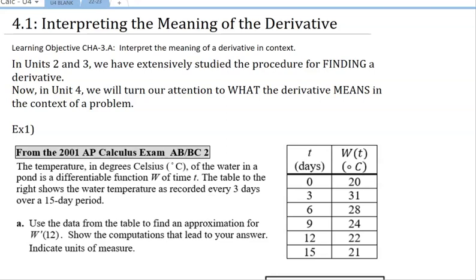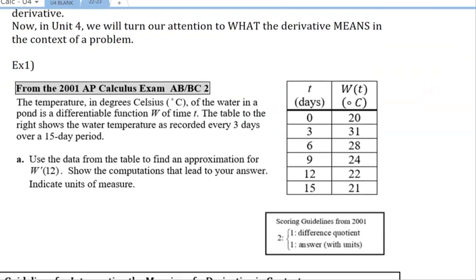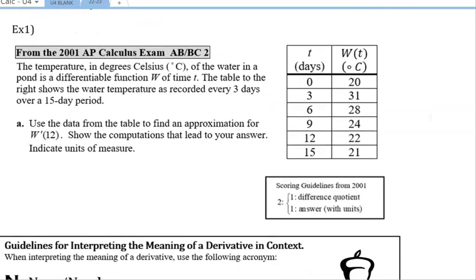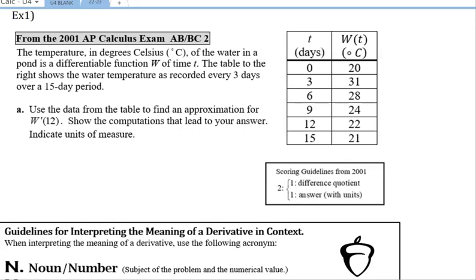And you will need a graphing calculator for this. So for this first example, we have a table of values where it says temperature in degrees Celsius of the water in a pond is a differentiable function, so derivative exists, W of time T. So W of T is the temperature at a specific time T for this pond. And it says the table shows the water temperature recorded every three days over a 15-day period.